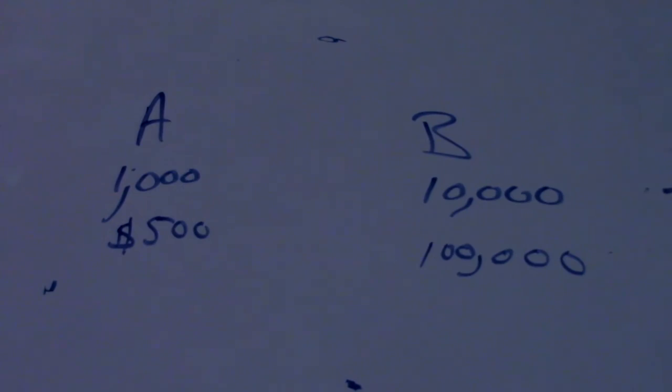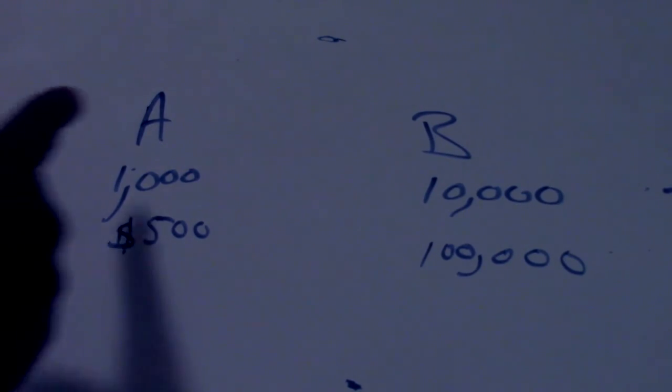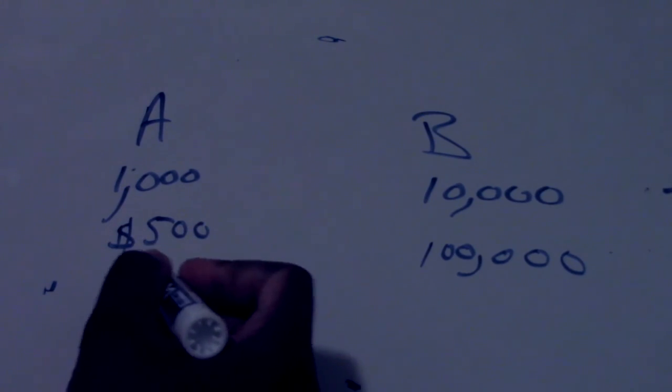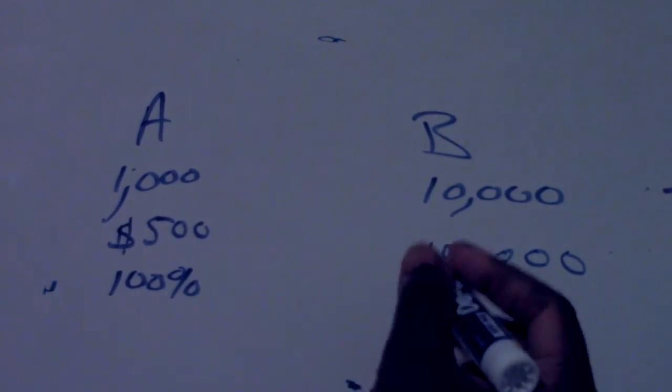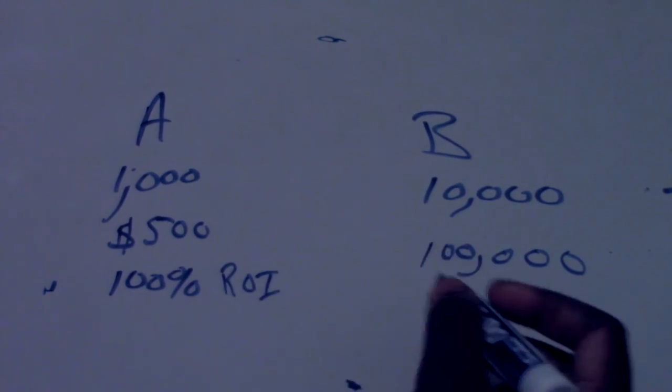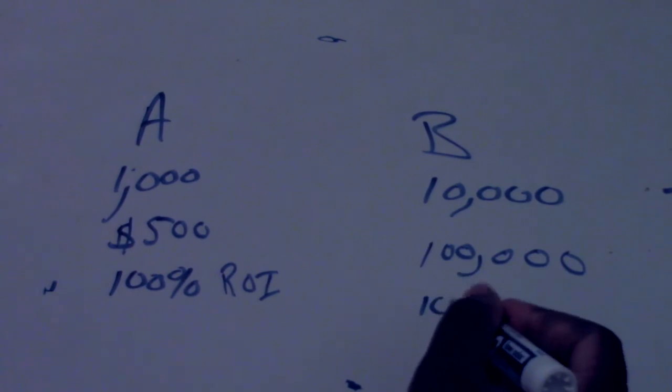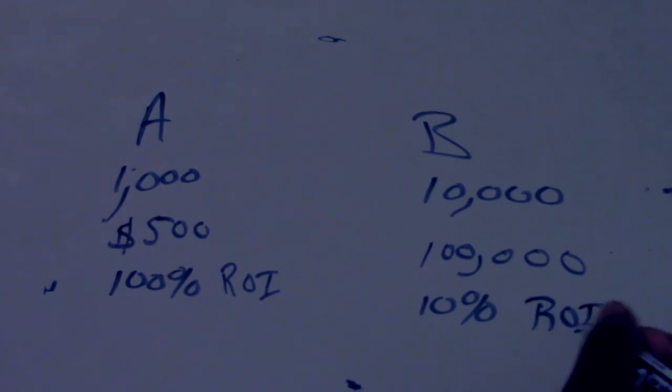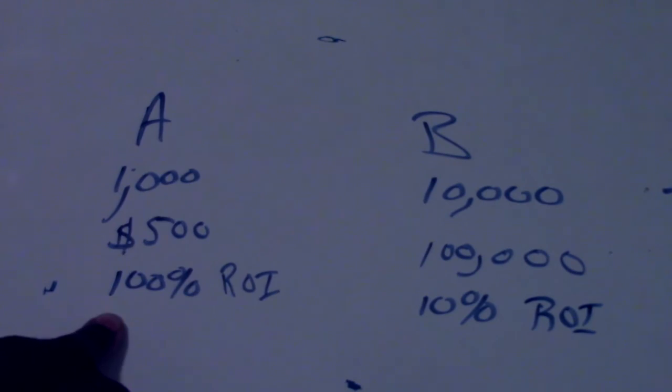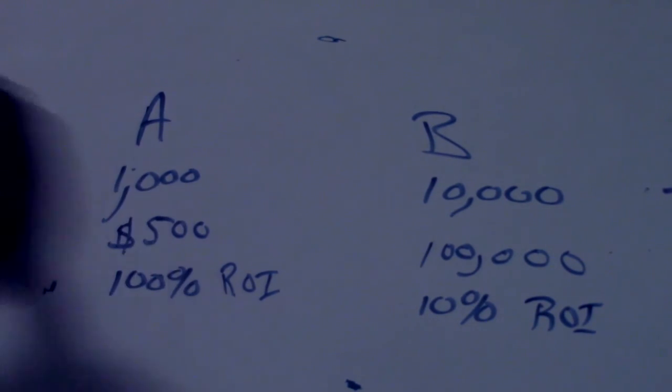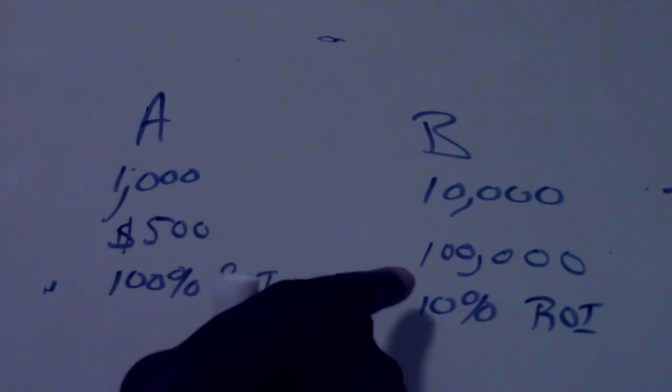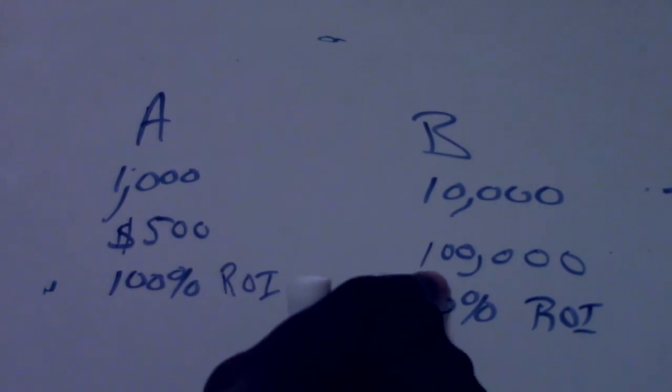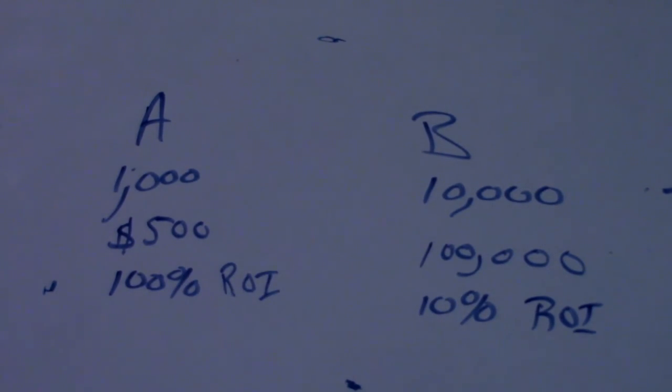So by knowing this, now you know person A is the better investor. Now let me tell you how percentages play a big role. If I told you person A made 100% return on investment (I'm going to put ROI for return on investment), but person B only made a 10% return on investment. Person A made 100% return on investment because he invested $500, he doubled his money, it's now worth a thousand. Person B invested $100,000, they made $10,000, making their return on investment 10%.